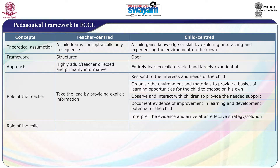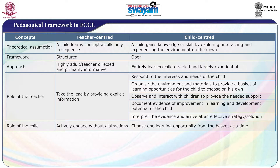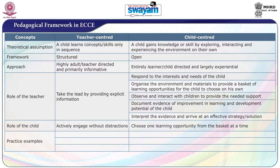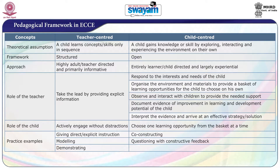What is the role of the child in the teacher-centered approach? The child should actively engage without distraction. But in the learner-centric approach, the child has the liberty to choose one learning opportunity from the basket at a time based on their own interest. In terms of practice examples, teacher-centered approach involves giving direct or explicit instruction, modeling, and demonstrating. Whereas, in the child-centered approach, it is all about co-constructing, questioning with constructive feedback, and providing cues or hints for assistance.